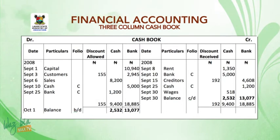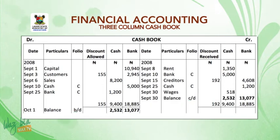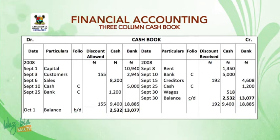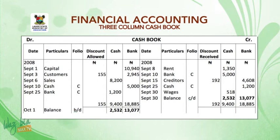So on September 10, on both sides: on the debit side under particulars write 'cash', under folio write capital letter C, and under bank write $5,000 — meaning $5,000 enters the bank account. Then on the credit side, same date September 10, under particulars write 'bank', under folio write capital letter C, and under cash write $5,000 — signifying that the cash goes out from the business.